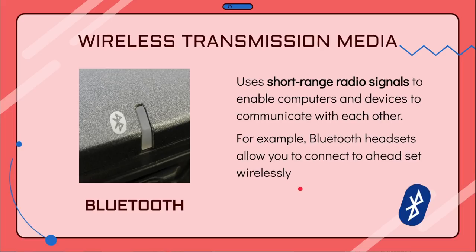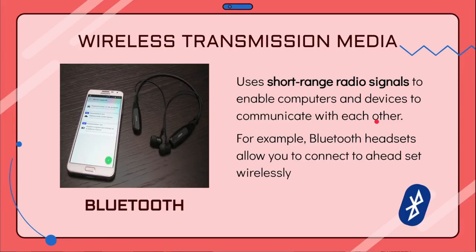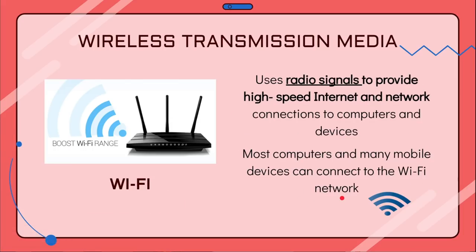Next we have Bluetooth. Bluetooth uses a short range of radio signals that enable computers and devices to communicate with each other. An example is a Bluetooth headset that allows you to connect to your smartphone wirelessly.